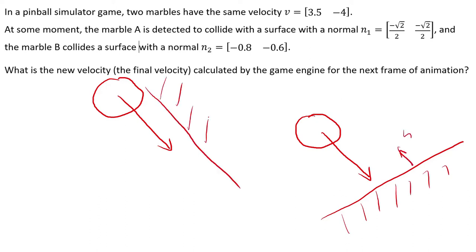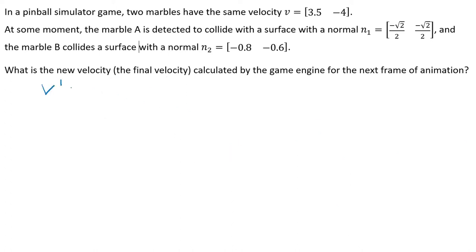So we are supposed to find the final velocity using the reflection vector v minus 2 v dot n times n. One thing very important here is that we have this v dot n.